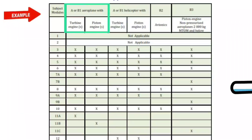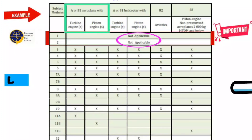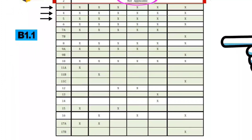B1.1 — Aeroplane with a turbine engine. Remember one important thing: whatever license category you are going for, DGCA has exempted you from Modules 1 and 2, so they are not applicable for us. For B1.1, the modular requirements are Modules 3, 4, 5, 6, 7A, 8, 9A, 10, 11A, 15, and 17A.